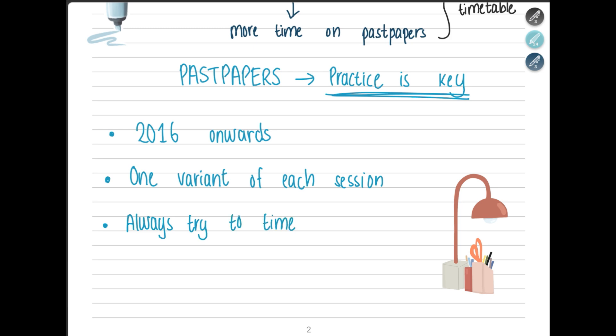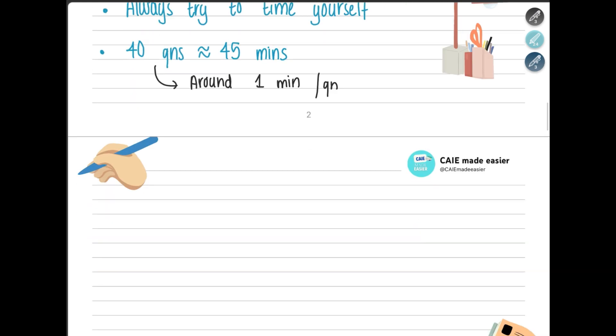Always try to time yourself. Whenever you're doing your exam paper, put a time clock. There are approximately 40 questions and 45 minutes, so approximately you can give one minute per question. Try to finish all the questions and also revise your answers during that time period.